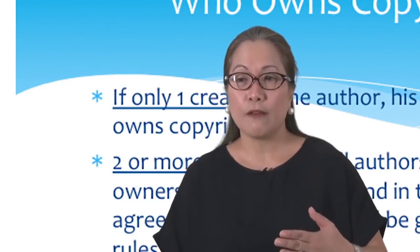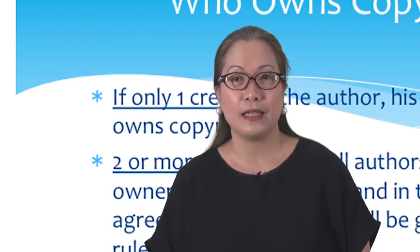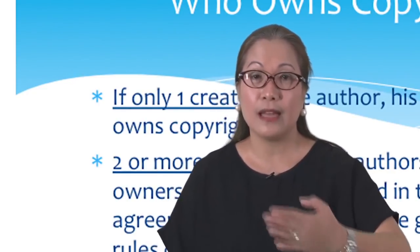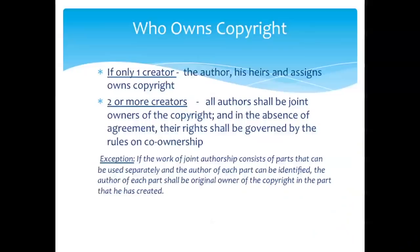Aside from knowing if your work is copyrightable, you have to know who the owner of that copyright is if you are the user of the material. There are rules to determine who the owner of copyright is. One, if there's only one creator, he is the owner, but if he dies, his heirs and assigns will own his copyright for a period of 50 years. If there are two or more creators, then all authors shall be the joint owners of the copyright, and in the absence of agreement, the rights shall be governed by the rules on co-ownership.